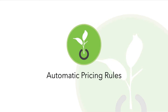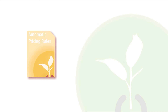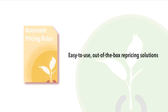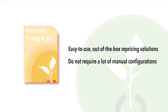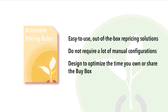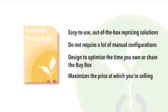Hello, welcome to this quick look at automatic pricing rules and how they work. Automatic pricing rules are easy-to-use, out-of-the-box solutions for users that want to access seamless repricing functionality without spending too much time manually configuring their pricing strategies. Automatic pricing rules will attempt to optimize the time in which you own or share the buy box, while also maximizing the price at which you are selling your product.